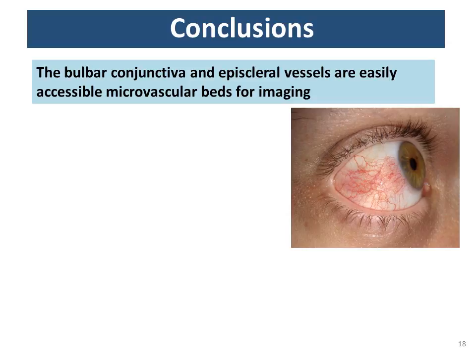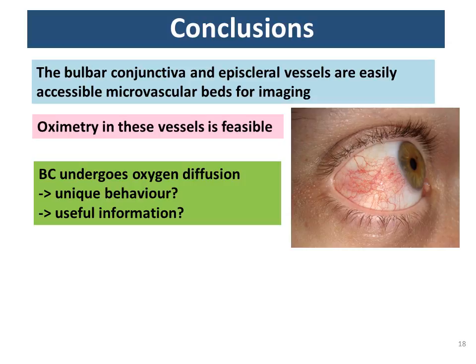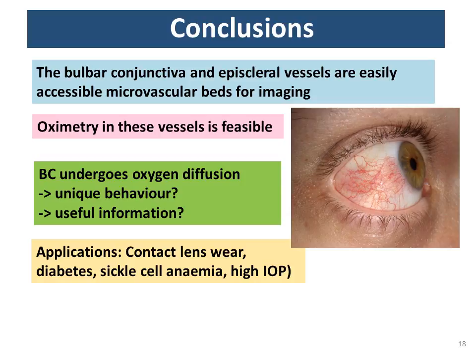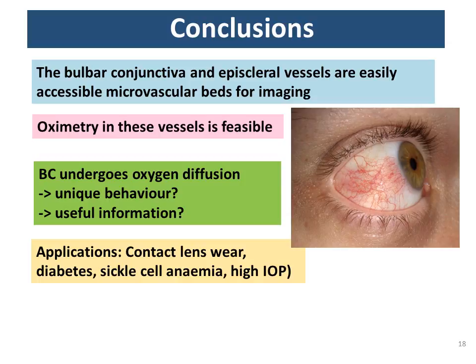In conclusion, these are readily accessible vessels for imaging. Oximetry in these vessels is feasible. The bulbar conjunctiva undergoes interesting oxygen diffusion effects, and there are potential applications in contact lens wear, diabetes, sickle cell anaemia, and high intraocular pressure. I'd like to thank supervisor Andy Harvey for letting me pursue this idea, Tushar for encouraging it, Javier for help with IRIS, and Andy McNaught for his ophthalmological expertise. Thanks for listening.